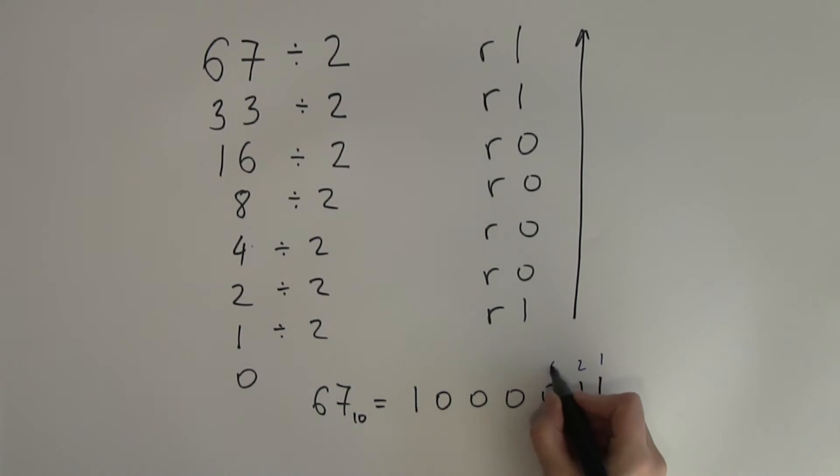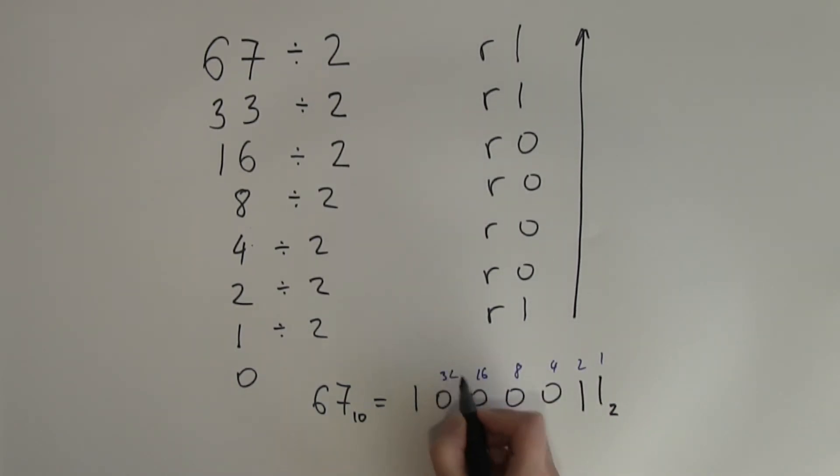1, 2, 4, 8, 16, 32, 64. 64 plus 3 makes 67 so I'm happy because the answer is correct.